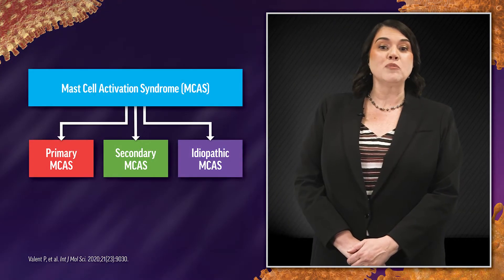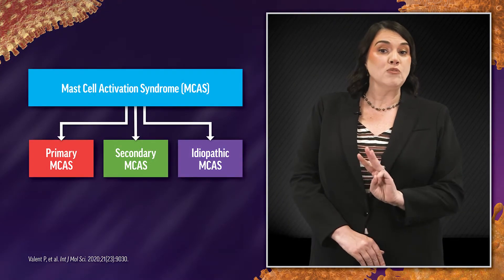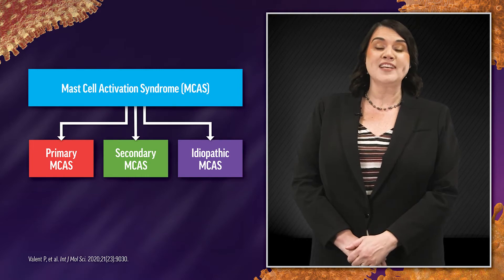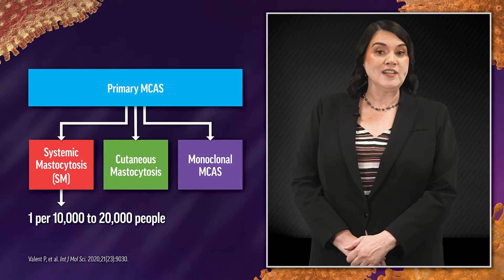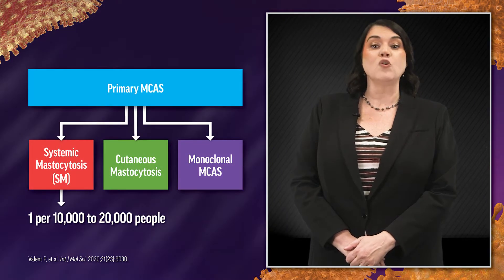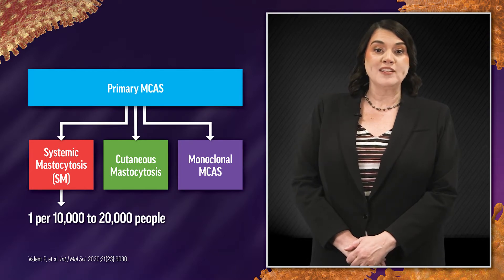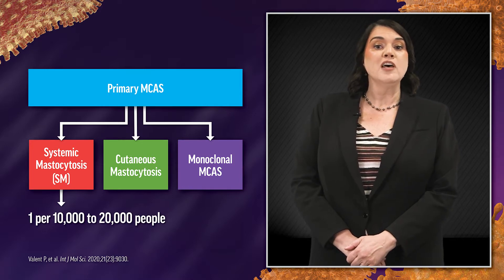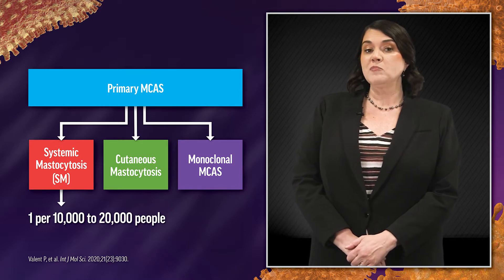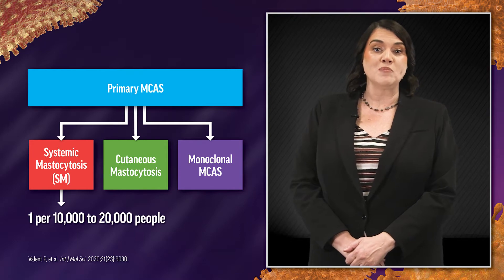Mast cell activation syndromes can be broadly divided into three types: primary, secondary, and idiopathic. Systemic mastocytosis, or SM, which is a primary disorder of mast cells along with cutaneous mastocytosis and monoclonal mast cell activation syndrome, affects approximately one person per 10,000 to 20,000 in the population.